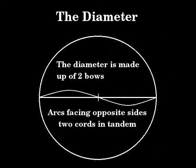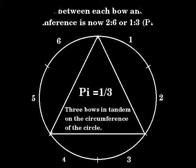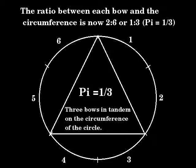When we draw a straight line through the center of a circle, we refer to that line as the diameter. The diameter is made up of two bows — arcs facing opposite sides of the circle — two cords in tandem. Should we now place the two bows in tandem on the circumference of the circle, we discover that the large bow subdivides the circle into three equal segments. The ratio between each bow and the circumference is now 2 to 6, or 1 to 3.